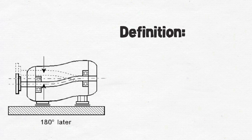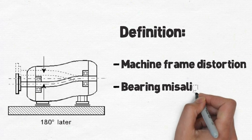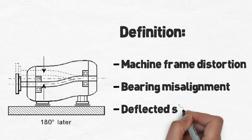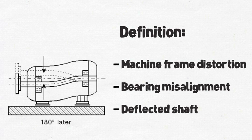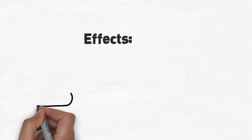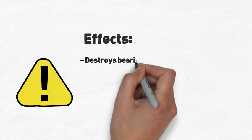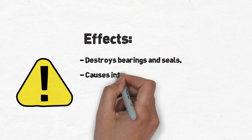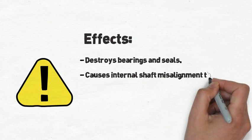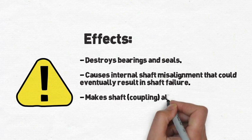Soft foot means machine frame distortion. It leads to misalignment of the bearings and an internally deflected shaft. This affects the machine by overloading bearings and seals, resulting in excessive wear and tear and even premature shaft failure. It also makes shaft alignment very difficult.